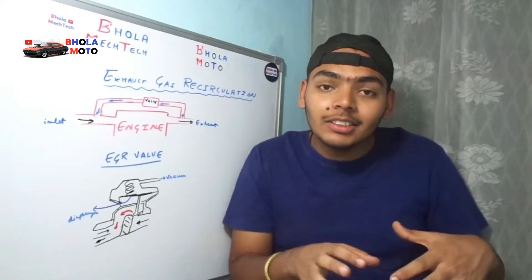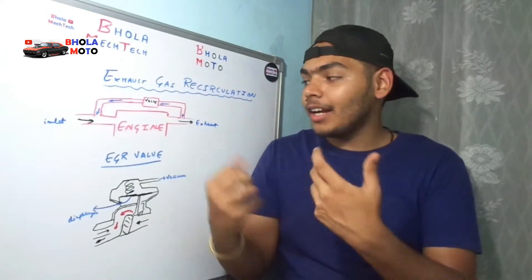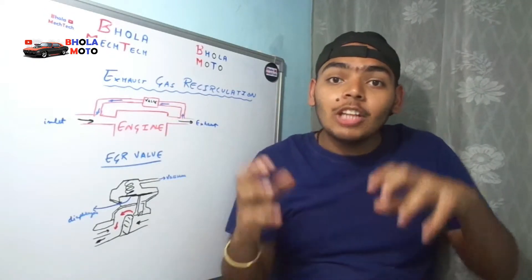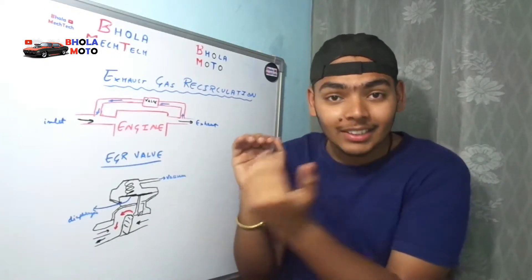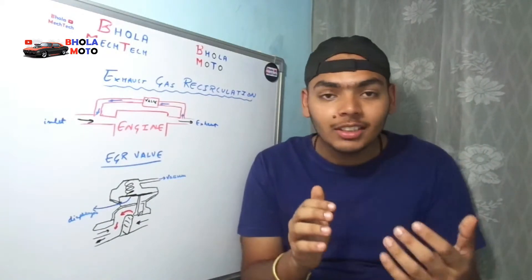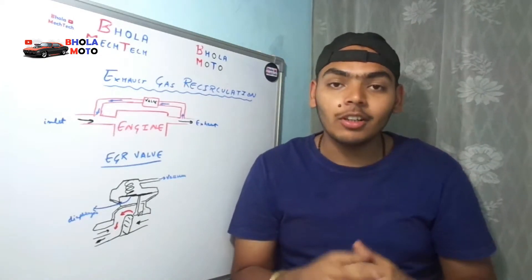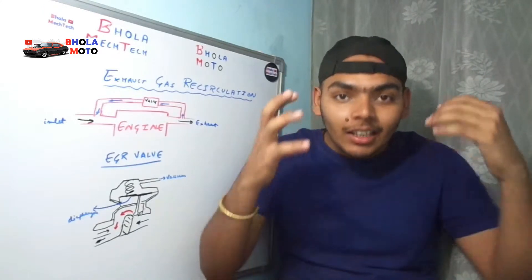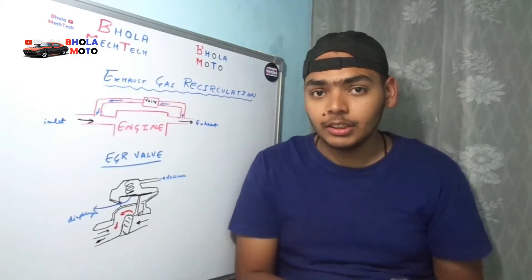In diesel engines, what happens is only air is going to be sucked, and the exhaust gases are going to be mixed with this air. In this way the exhaust gases replace some of the oxygen. When oxygen is reduced, less combustion will take place. If combustion is less, the peak temperature will be less, and if the peak temperature is less, the NOx emission will be less. This is how it works in petrol and diesel engines.